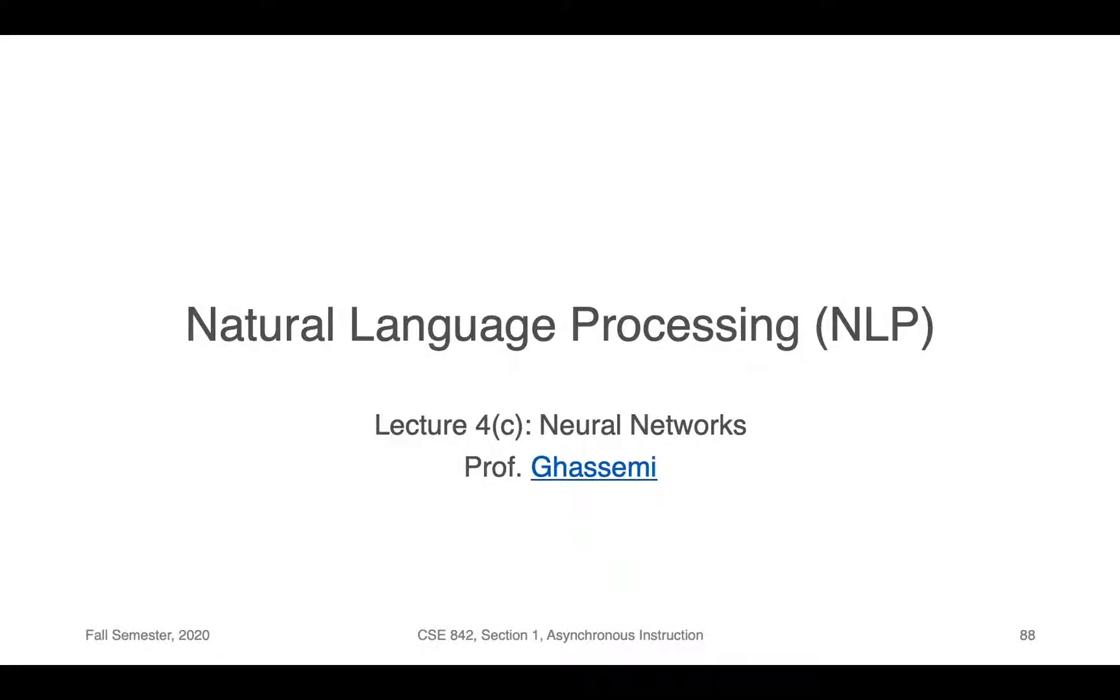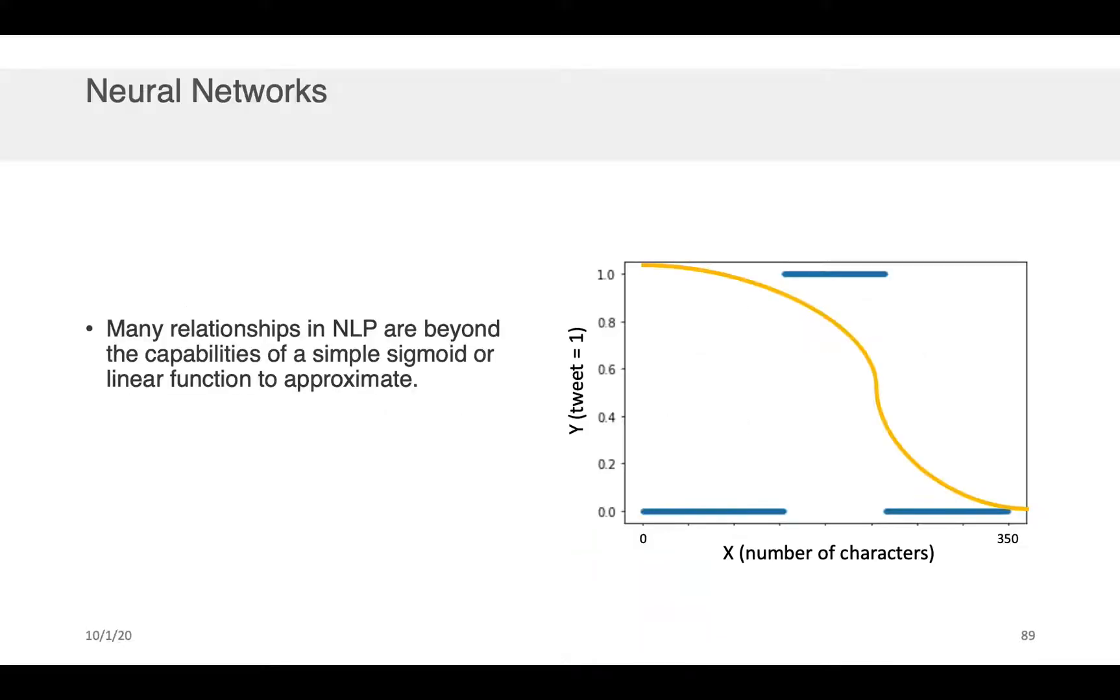Hi, Professor Gassimi here. In this component of the lecture, we'll be discussing neural networks. Now, many of the relationships in NLP are beyond the capabilities of simple sigmoids or linear functions to approximate. And up until now, a lot of our focus has been on things like logistic regression, which is obviously a compressed version of a linear function.